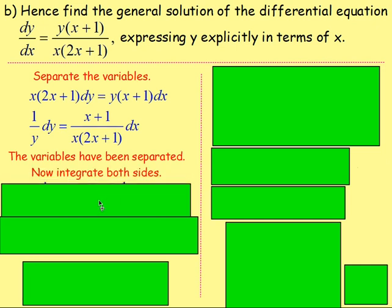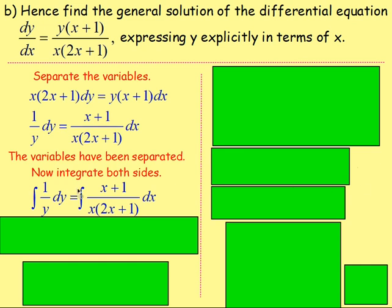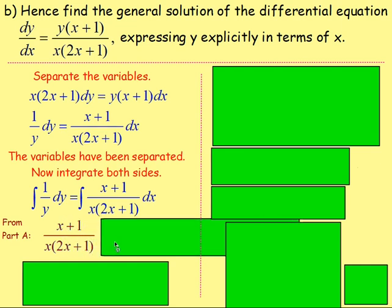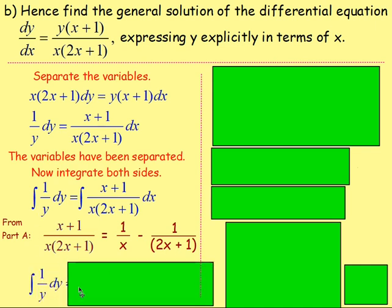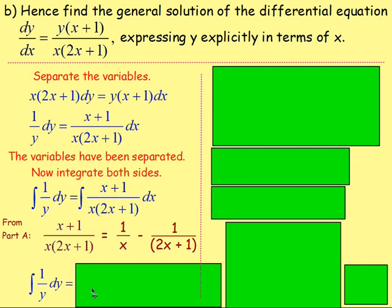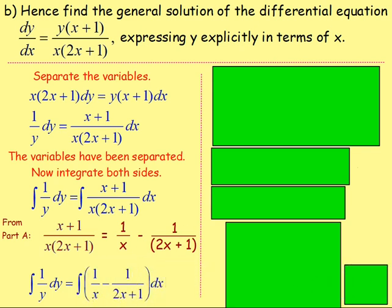Integrate both sides — integrating 1 over y, and integrating (x plus 1) over x(2x plus 1). Use your answer from part a: (x plus 1) over x(2x plus 1) equals 1 over x take away 1 over (2x plus 1). So we integrate that form.